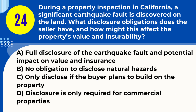Question 24. During a property inspection in California, a significant earthquake fault is discovered on the land. What disclosure obligations does the seller have, and how might this affect the property's value and insurability? A. Full disclosure of the earthquake fault and potential impact on value and insurance. B. No obligation to disclose natural hazards. C. Only disclose if the buyer plans to build on the property. D. Disclosure is only required for commercial properties. Answer: A. Full disclosure of the earthquake fault and potential impact on value and insurance. Explanation: Sellers in California must disclose known natural hazards like earthquake faults, which can affect a property's value and insurability.